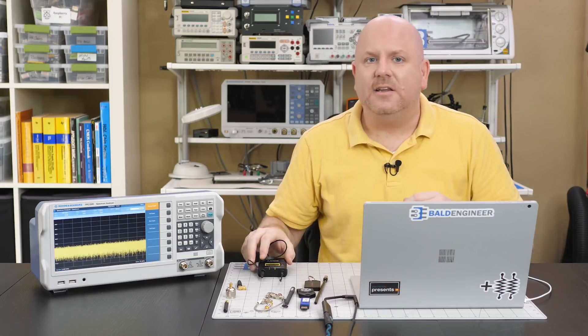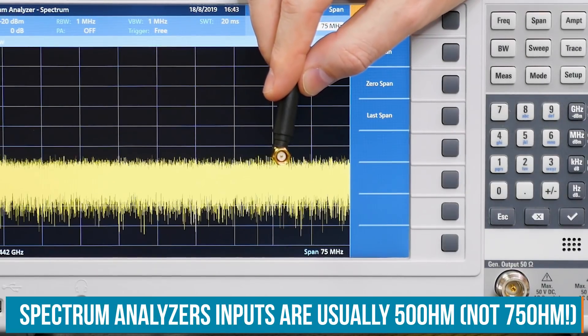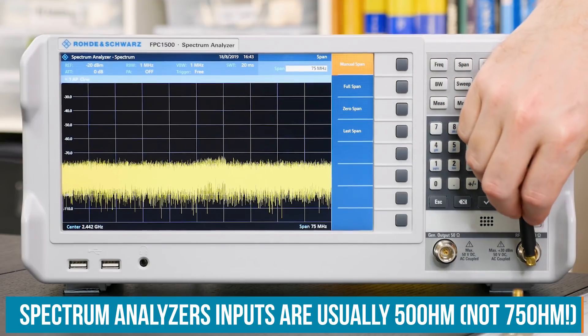Now, first, we need to get our signal into the analyzer. And usually, you would use cables to attach to the n-type connector. For our exercise, I'm using this small antenna. It has an SMA connector on it, which will not directly mate to the n-type connector. So, I'll have to use an adapter.